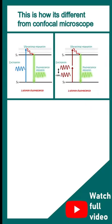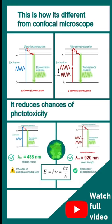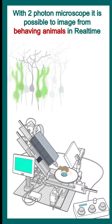This is how this is different from confocal microscopy which uses one photon process. Two photon microscopy is very useful because it uses a laser with higher wavelength. Higher the wavelength, lower is the energy, that means lower are the chances of phototoxicity or bleaching.